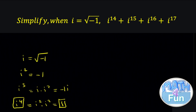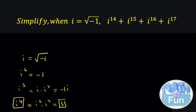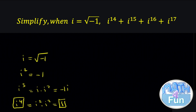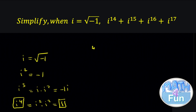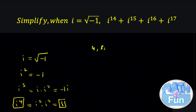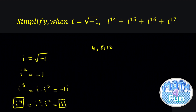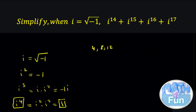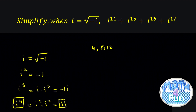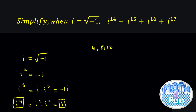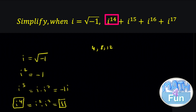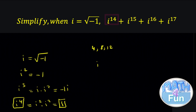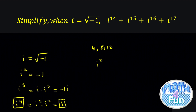So now, what do we do here? For i to the power 14, keep counting by 4 until you reach a number smaller than 14: 4, 8, 12. So up to 12, plus 4 gives you 16, which means we can ignore i to the power 4 three times from i to the power 14. How much is left from 12 to 14? It's 2, so you can write it as i to the power 2.